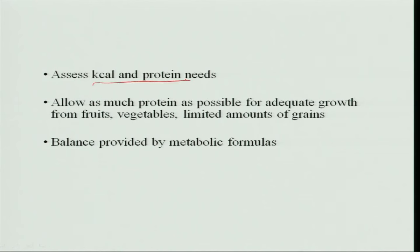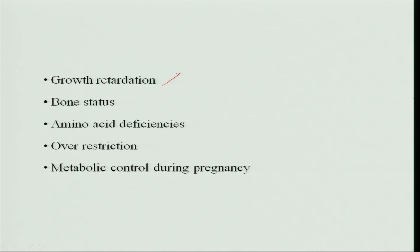Assess the kilocalorie and protein needs of the baby and allow as much protein as possible for adequate growth, since infancy is the period of highest growth. Protein can be provided from vegetables and limited amounts of grains, and the balance should be provided by metabolic formulas. These children receive special formulas; growth retardation and bone status are affected, and over-restricting protein will also hamper growth. Metabolic control should start during pregnancy.